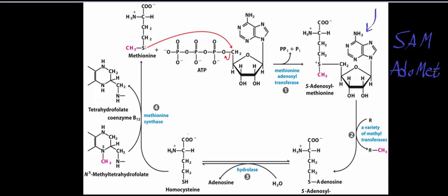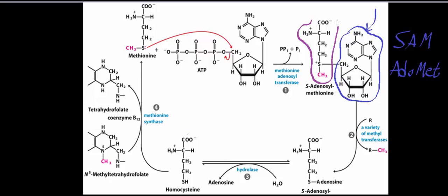Before we go into the cycle itself, let's analyze SAM. Number one, we have this adenosine group — this is our adenosine, our nucleoside. Then notice we have an amino acid component right here — it's methionine. You have your two methylene groups and then a methyl thioether, so this is methionine essentially.